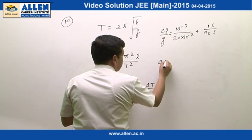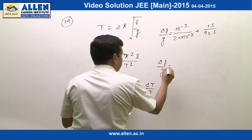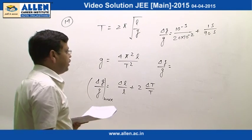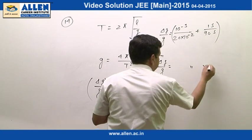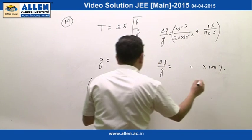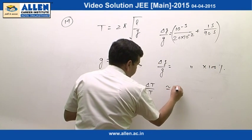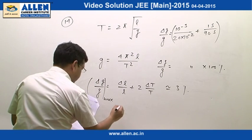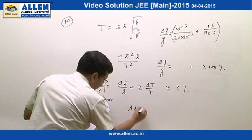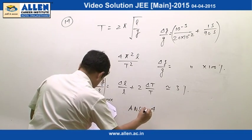So if you want to calculate this error in percentage, we just need to multiply this entire quantity with 100 and this turns out to be approximately 3 percent. So the correct option in this case is answer 4.